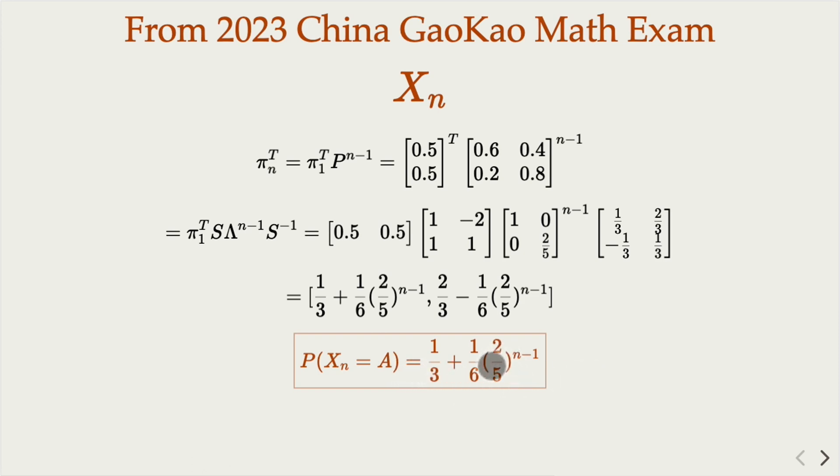Notice that when n is large enough, this probability converges to one-third. Eventually, Alice has one-third chance, and Bob has two-thirds chance, because he has a higher probability to remain playing. Which makes sense.